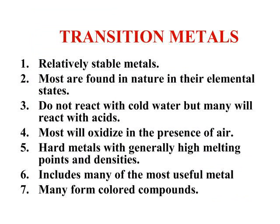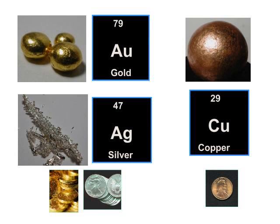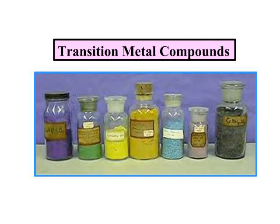The transition metals are very stable metals. These are the metals you tend to come into contact with — copper, zinc, chromium. These are found in nature. They do not react with water, but they will react with acids. Most of them will oxidize and form oxides in the presence of air. They are hard metals with high melting points, and include our coin metals — zinc, copper, nickel, and so on. They are the elements necessary in compounds to form colored compounds. When you're looking at your transition metals, you're thinking of gold, silver, copper — they are the only metals that can form colored compounds, and you will do a lab where you create some of these transition metal compounds.